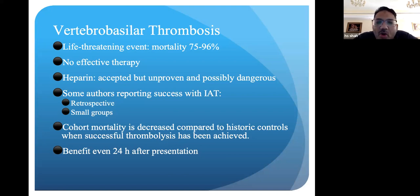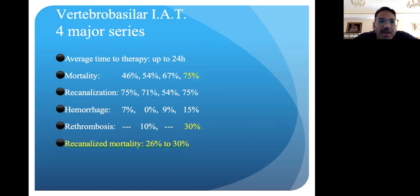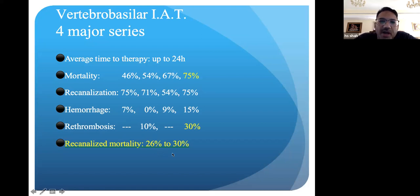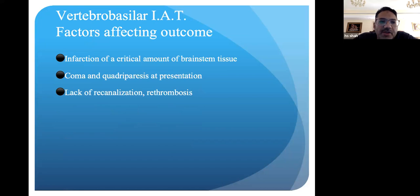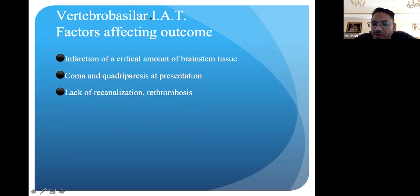Patients with posterior circulation strokes will often present with coma or locked-in syndrome. Mortality rates for vertebral basilar strokes are up to 75%. In some studies, recanalization can be done, and hemorrhage rates are a little bit lower than anterior circulation, but re-thrombosis rates are high — even though you open the vessels, they clot again. Mortality, even with recanalization, is unfortunately still high. Complications include quadriplegia, total loss of function in all four limbs, and re-thrombosis remains a major problem.